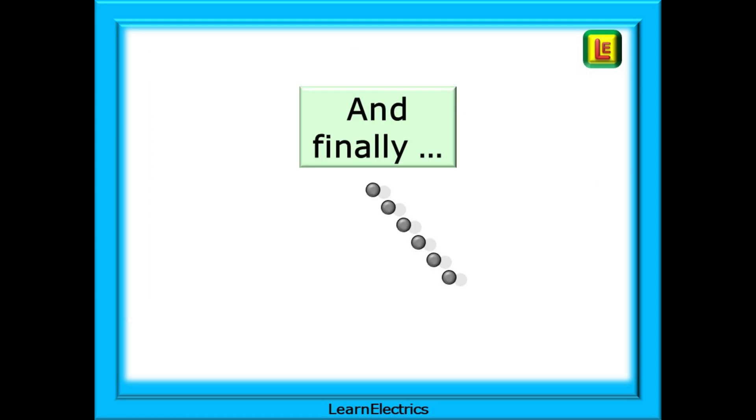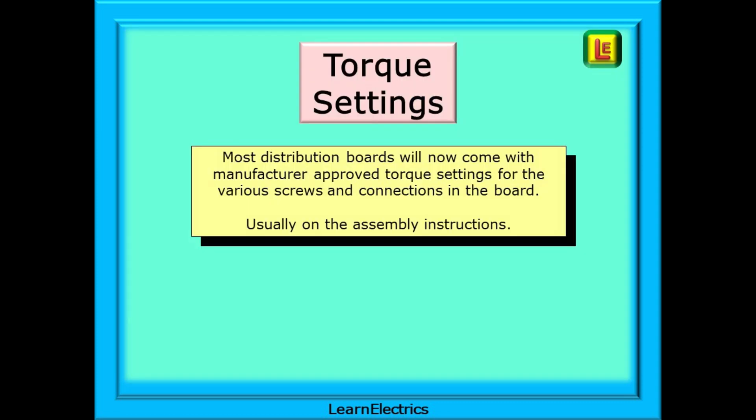And finally, a couple of points to finish on. The correct torque settings are becoming more important. Gone are the days when we did them up tight enough just by feel. So use a torque screwdriver. They're a good investment. Most distribution boards will now come with manufacturer-approved torque settings for the various screws and connections in the board. These are usually on the assembly instructions and sometimes the manufacturer has glued a label to the inside of the cabinet with the torque settings on it.